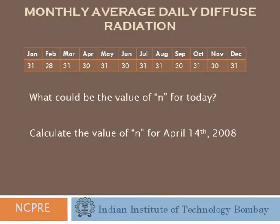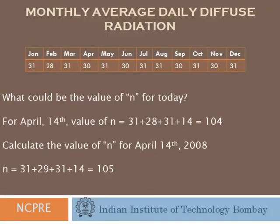A simple calculation: what is the value of n for April 14, 2008? Since 2008 is a leap year, February has 29 days. So n = 31 (Jan) + 29 (Feb) + 31 (Mar) + 14 (Apr) = 105. Including the leap year correction gives n = 105 or 106.